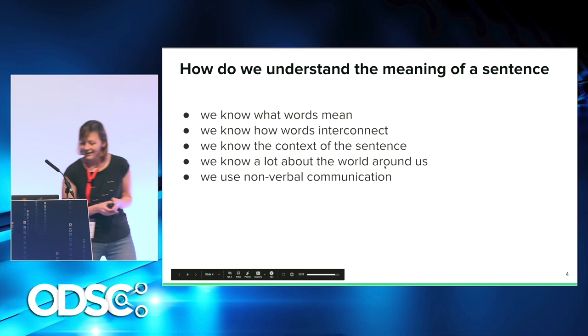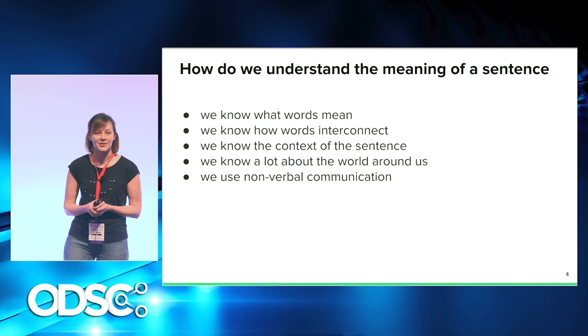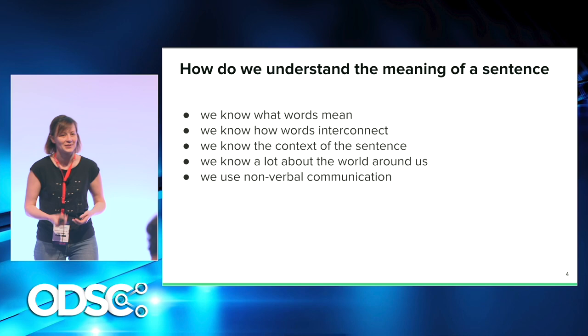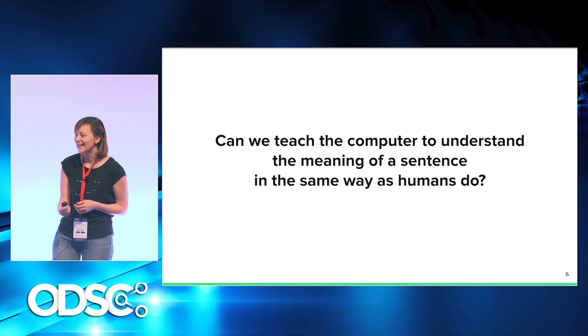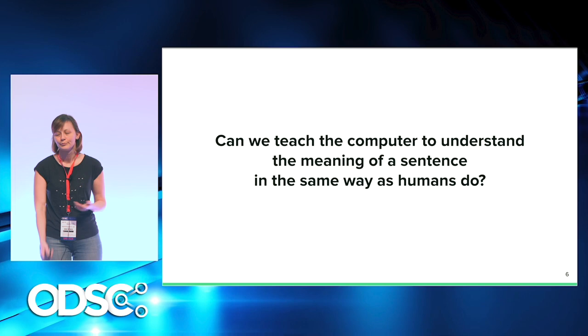We know a lot about the world around us, so we know what's probable and what's not probable. Also, I'm doing these gestures with my hands, which gives you some information — we use nonverbal communication all the time. That's why situations like this almost never occur in everyday life, because you usually know what people mean. So the question is: can we teach the computer to understand the meaning of a sentence in the same way as we humans do?